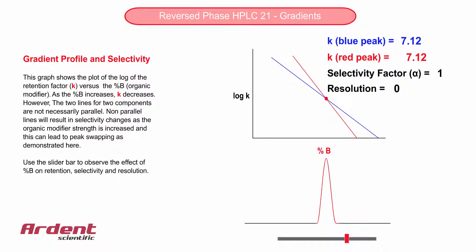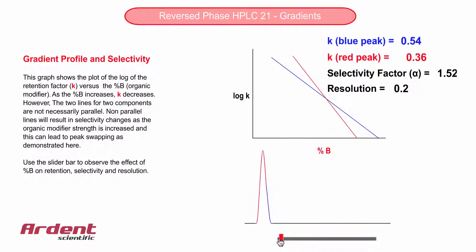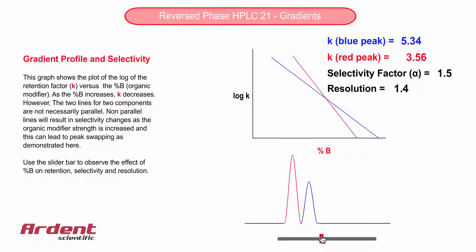As the slider bar changes, you will notice one of the interesting features of gradient illusion: the selectivity of the mobile phase can change, resulting in peaks swapping over. This is very difficult to predict.